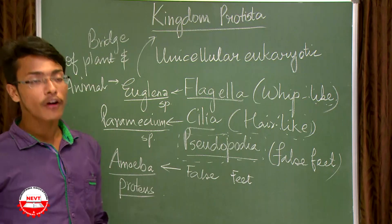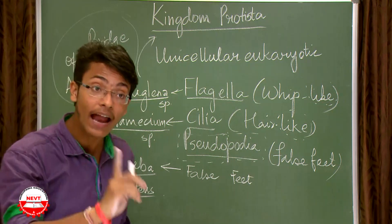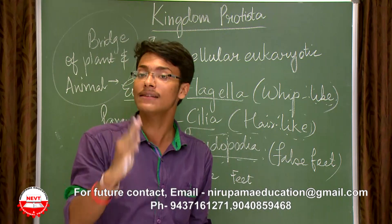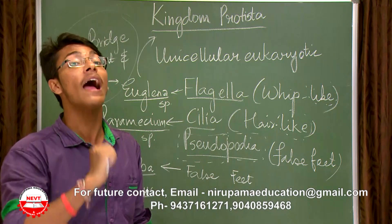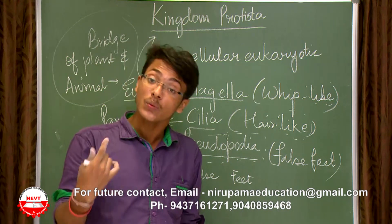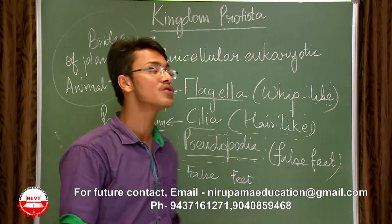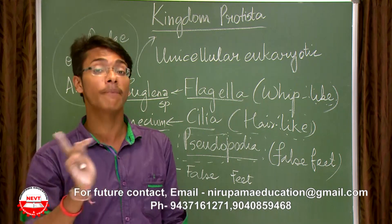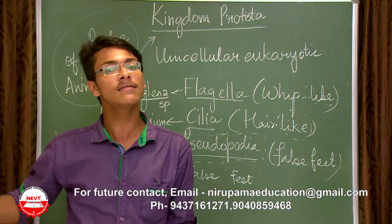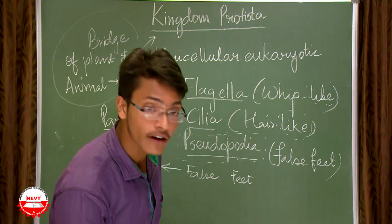Euglena is considered the bridge between plant and animal kingdoms, and it was the sole organism responsible for a major difference in classification systems — debating whether it should be classified as a plant or an animal. This is because Euglena has chlorophyll and can conduct photosynthesis to make its own food, yet it is also heterotrophic and dependent on others for food, showing two modes of nutrition. It was ultimately placed in Kingdom Protista.